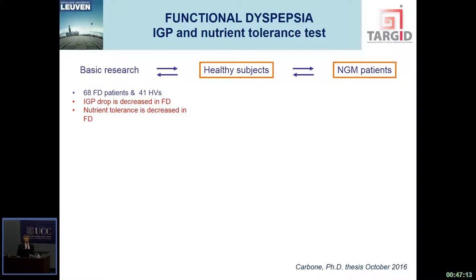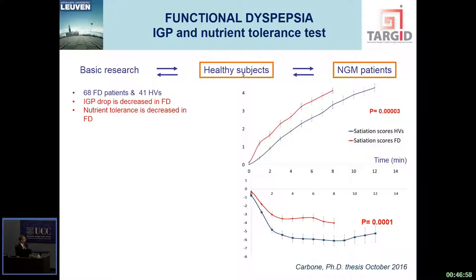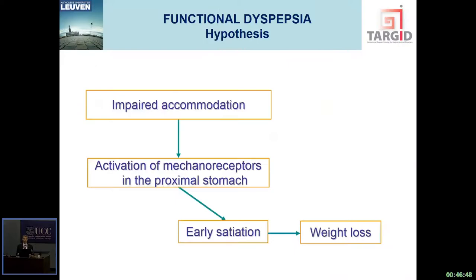Is this relevant? Florencia Carbone, my PhD student, did this in healthy volunteers and patients with functional dyspepsia. Healthy volunteers show a normal pressure drop and recovery. FD patients have a decreased drop, earlier satiation for the same nutrient volume, and a markedly reduced nutrient volume tolerance. This raises the suggestion that accommodation drives a stomach relaxation followed by pressure recovery in humans, activating mechanoreceptors and driving meal-induced satiation. If this is impaired, you get early satiation and perhaps weight loss.